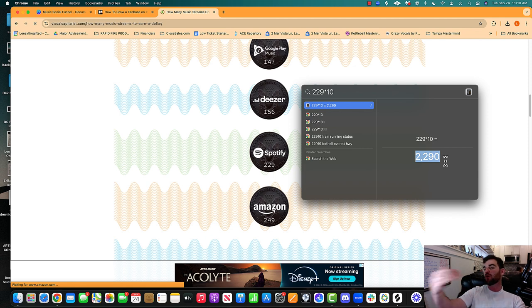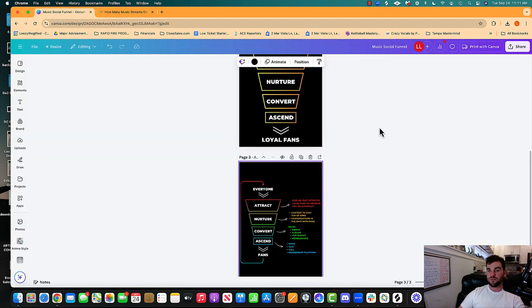So when somebody bought... So if I run paid ads on Instagram to get DMs and then those people DM me and they buy an album just for 10 bucks, that person is worth 2,290 Spotify streams. Where do you want to run your paid ads? Where do you want to run your paid ads? I mean, that's right. Isn't it kind of silly.